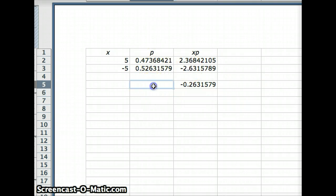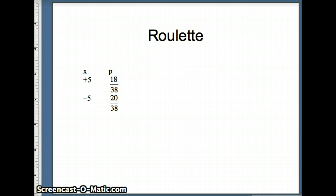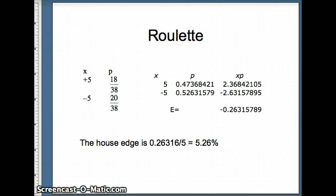We can say that our expected value, or E, is equal to negative 26.3 cents. We would expect to lose about 26 cents every time that we play this game. The house keeps about 26 cents for every $5 wagered, so the house's edge here is about 5.26%.